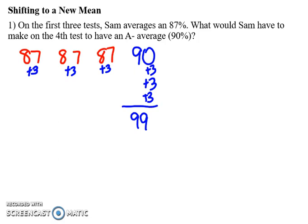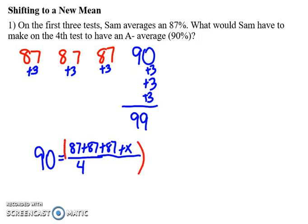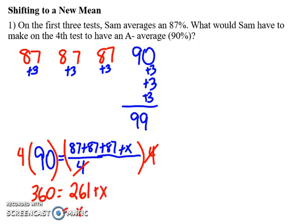The other method is using the formula for mean. The mean I want is 90, and I'm going to do four tests. My first three, since the average was 87, I can just plug in 87 for each of those three tests. I only have one more test, so I only need one x. Cross multiplying and solving, I'll still end up at the same place of 99. I'd multiply both sides by four, which cancels here, leaving 360 equals 261 plus x, so x equals 99.